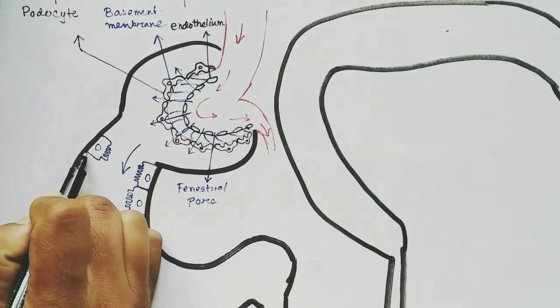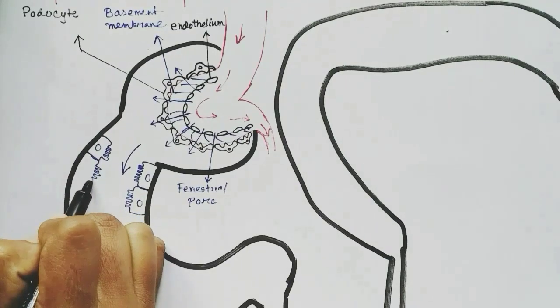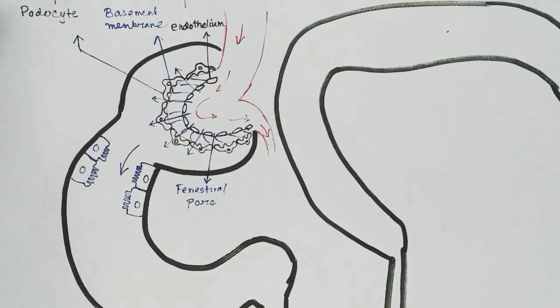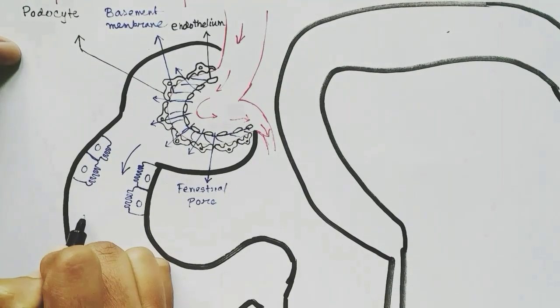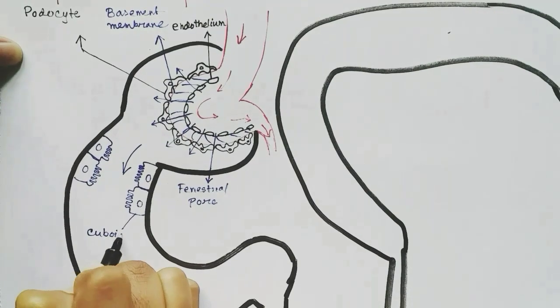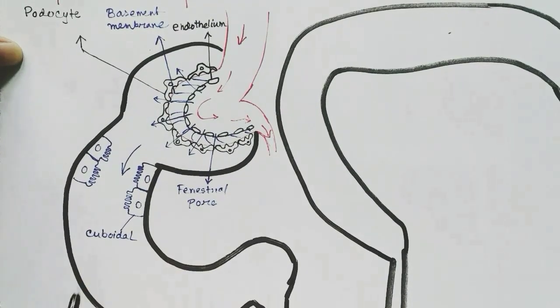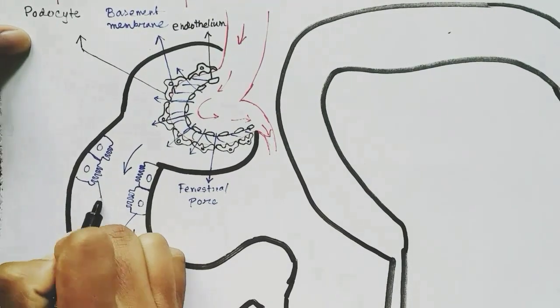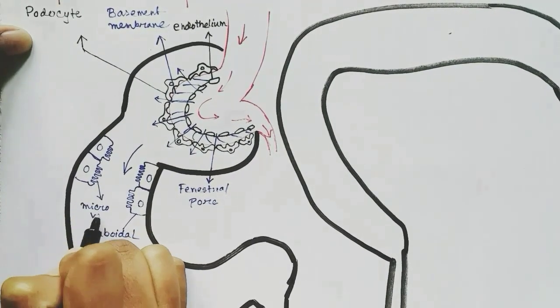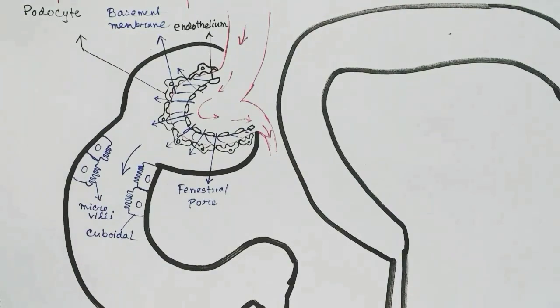Microvilli increase the surface area for reabsorption. These are the cuboidal cells and these are the microvilli, present in huge numbers throughout the proximal convoluted tubule.